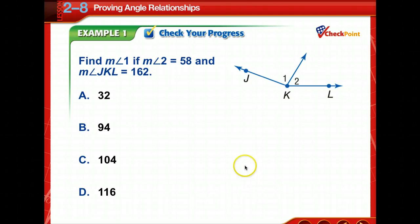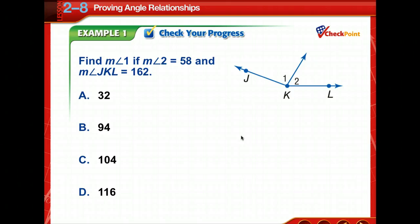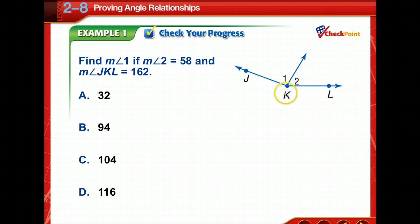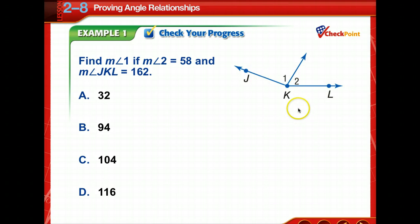Time to check your progress. Find the measurement of angle one if the measurement of angle two is equal to 58 and the measure of angle JKL is 162. The measurement of angle one plus the measurement of angle two equals the measurement of JKL. So angle one plus 58 equals 162. Subtracting 58 from both sides gives the measurement of angle one as 104.